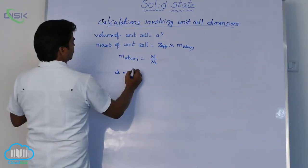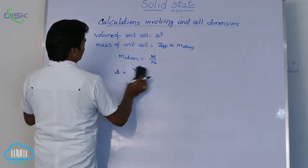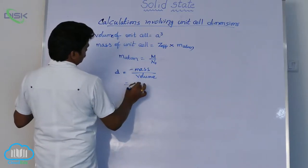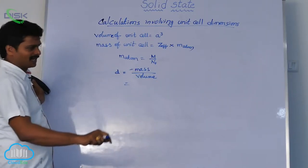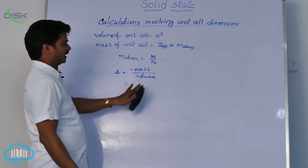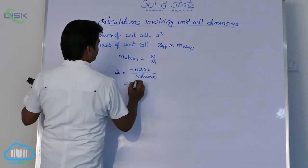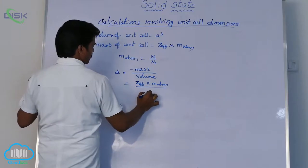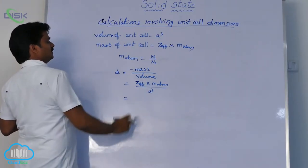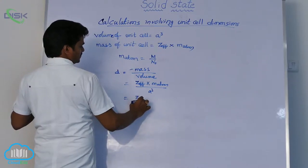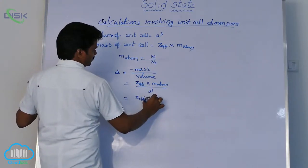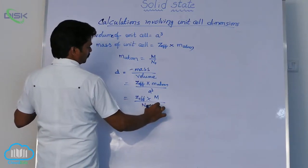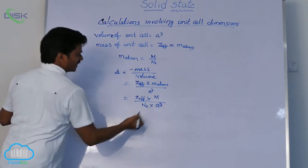So density is equal to mass divided by volume — that is, mass of all atoms per unit cell divided by volume of unit cell. The total mass of atoms equals Z_eff multiplied by mass of one atom, divided by A cubed. Substituting the mass of one atom as molar mass divided by Avogadro's number: density = Z_eff × M / (N₀ × A³). Using this formula you can find the density.